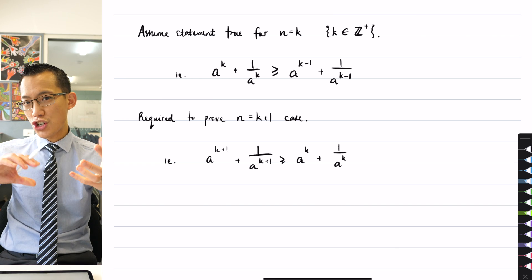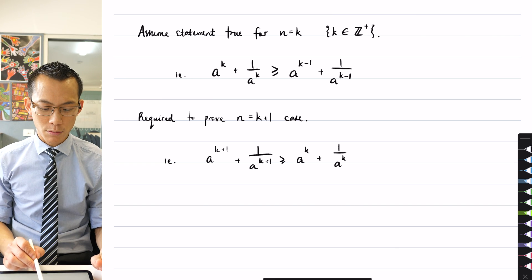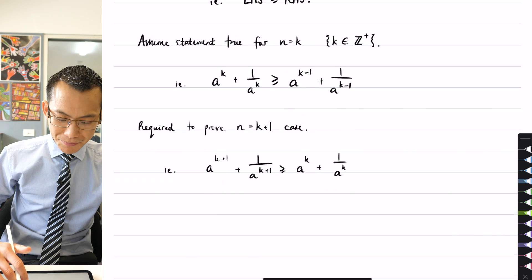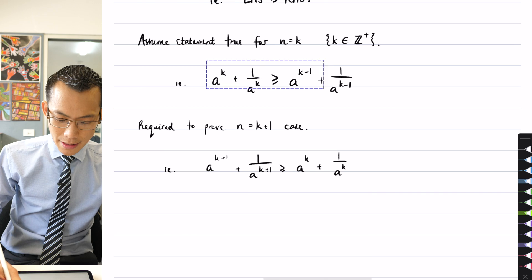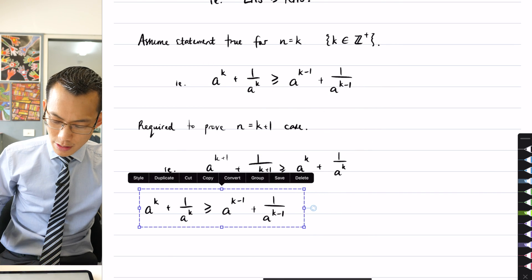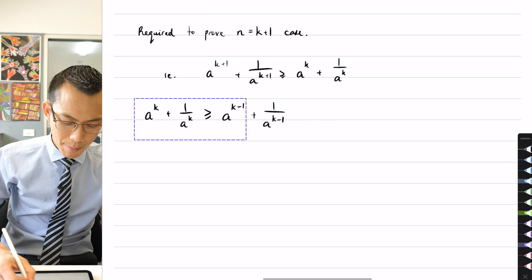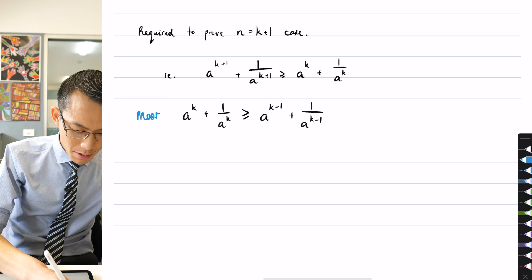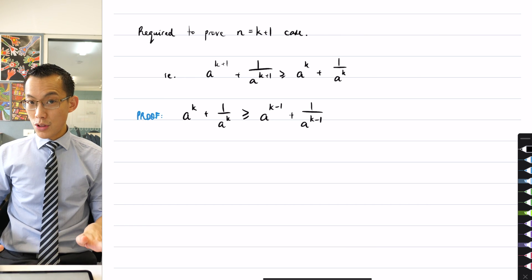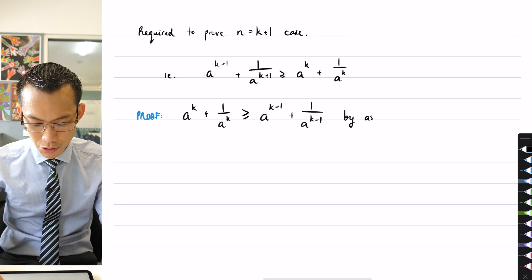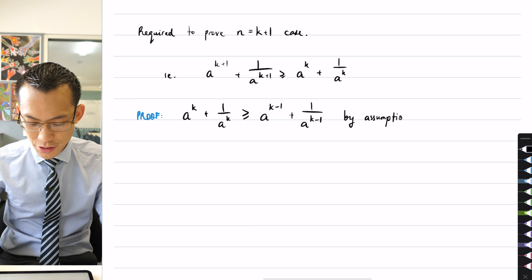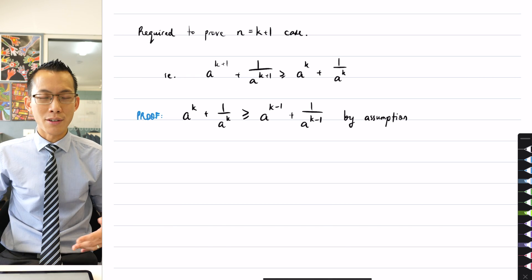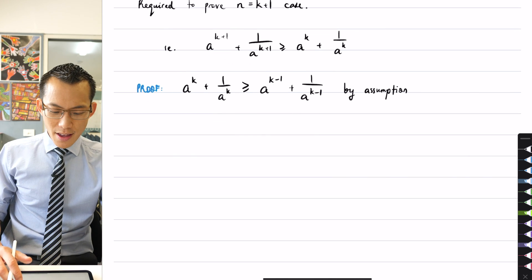But the particular method I'm going to use today is I'm just going to start from the assumption, and then mold and shape the assumption until it looks as close as possible to the k plus 1 case that I'm trying to prove. So I'm going to begin — here comes the proof. I'm just going to begin with this statement that came from the assumption, so I'll say 'by assumption.' This frees me from having to try and manipulate one of these terms to make it look like the assumption. I've just used it already as my mathematical foundation.